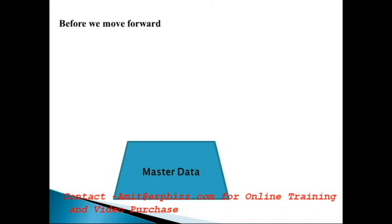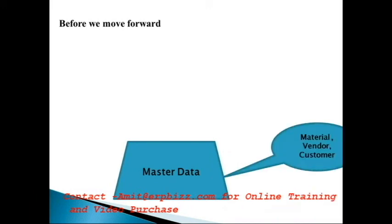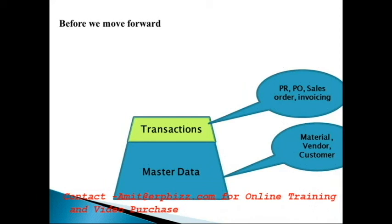For any kind of business process, if you want to perform any transaction or know profitability, you should first have some type of masters — like your material master, vendor master, and customer master. Once you have master data, you can perform transactions on it, like purchase orders, purchase requisitions, and sales orders.